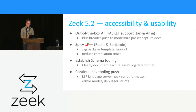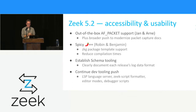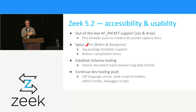Another theme is accessibility and usability. The first item I really wanted to mention is out-of-the-box support for AF_PACKET, which seemed to resonate well on Slack. It's clearly the go-to packet capture technology on Linux these days, and so far it's been maintained independently by Johanna Asel in a separate Zeek package. It just makes a lot of sense to pull that in and have it available on Linux systems out of the box. We're pairing that with a push to modernize the packet capture documentation, since the current documentation was quite dated — AF_PACKET has clearly emerged as a foundation.